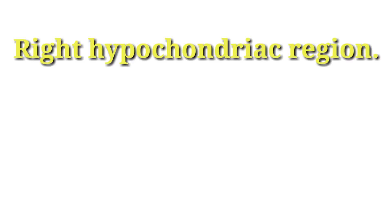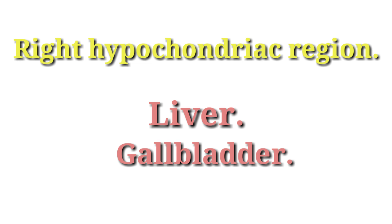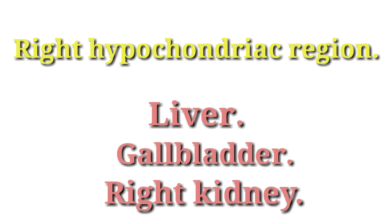The right hypochondriac region is the right upper quadrant of the abdomen. The organs lying in the right hypochondriac region are the liver, gallbladder, and right kidney.